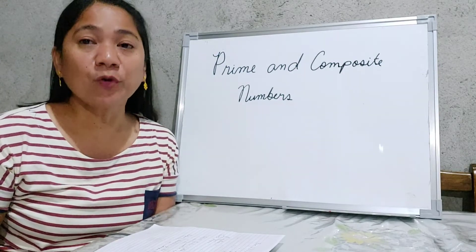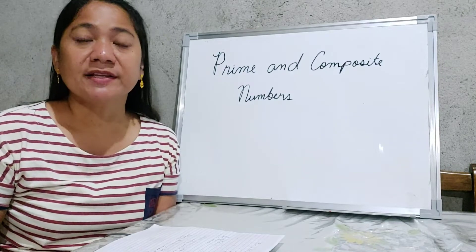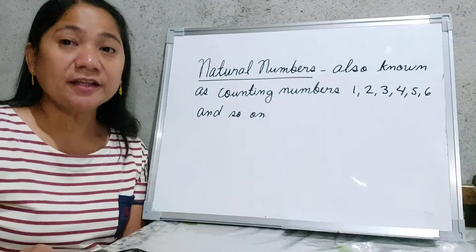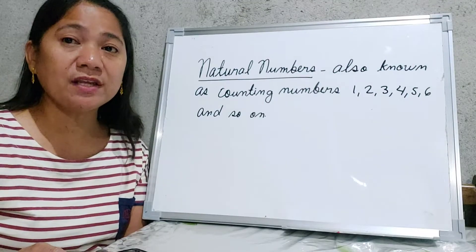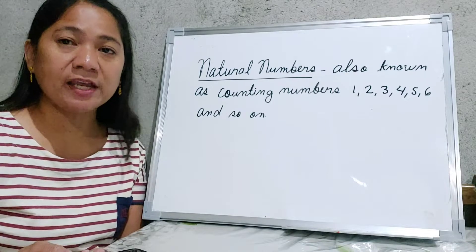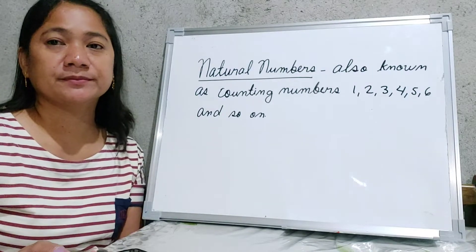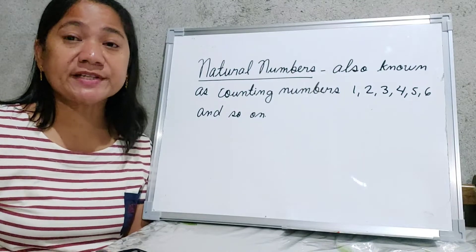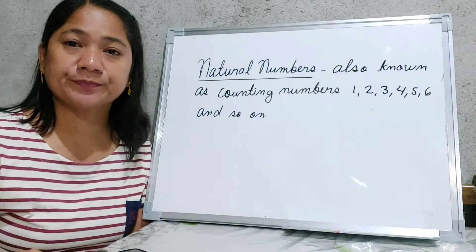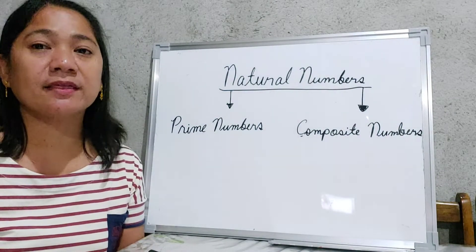Before we proceed to our proper lesson, let us discuss what natural numbers are. Natural numbers are also known as counting numbers, like 1, 2, 3, 4, 5, 6, and so on. Natural numbers can be classified into two types: prime numbers and composite numbers.